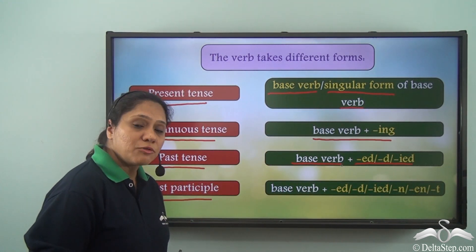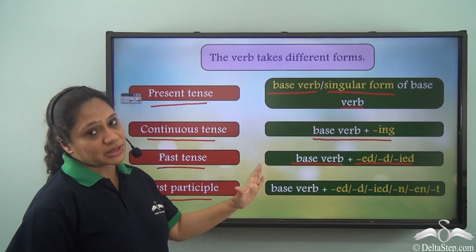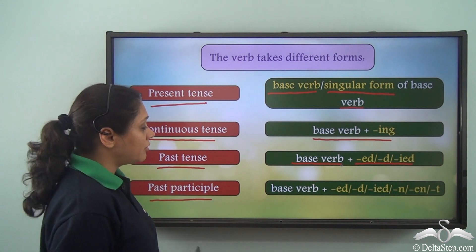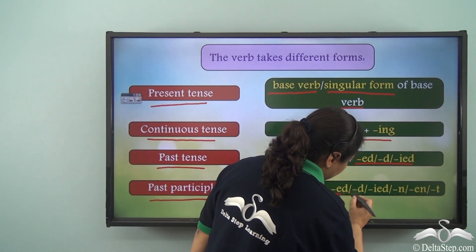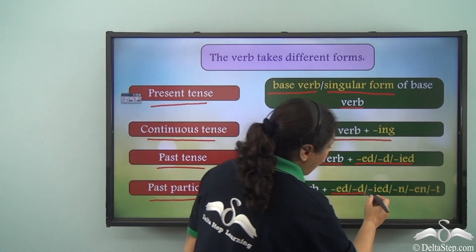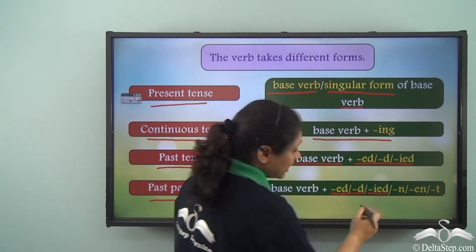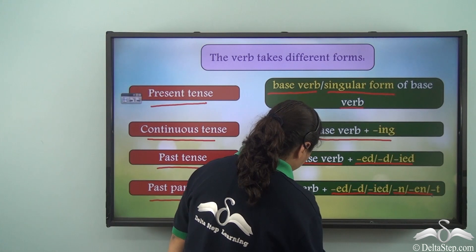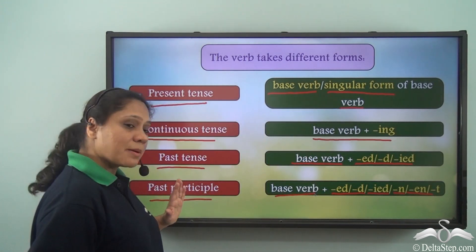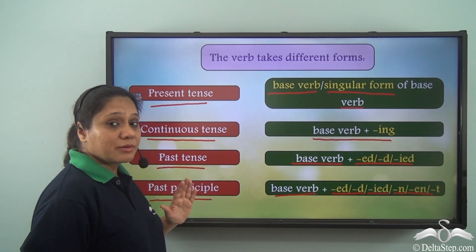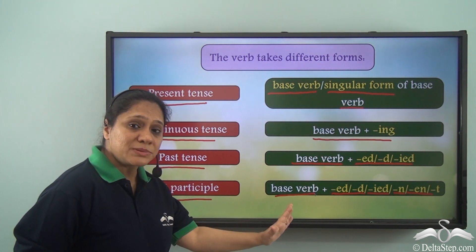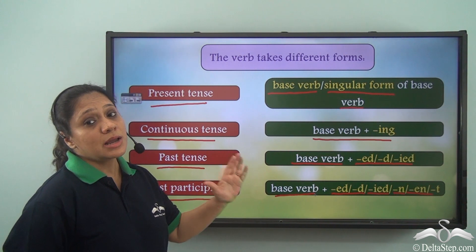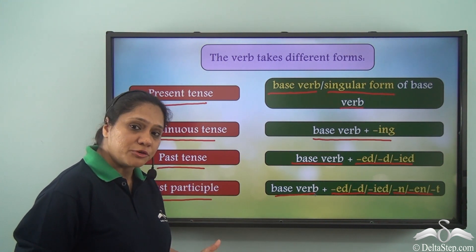Remember, irregular verbs may not follow these rules. In the past participle form, we add either '-ed', '-d', '-ied', '-n', '-en', or '-t' to the base verb to get its past participle form. Remember, irregular verbs may not follow any of these rules and may follow a completely different set of rules.